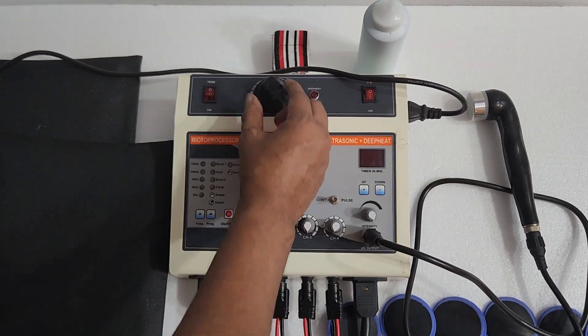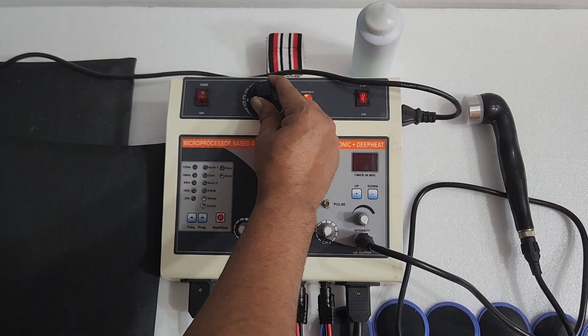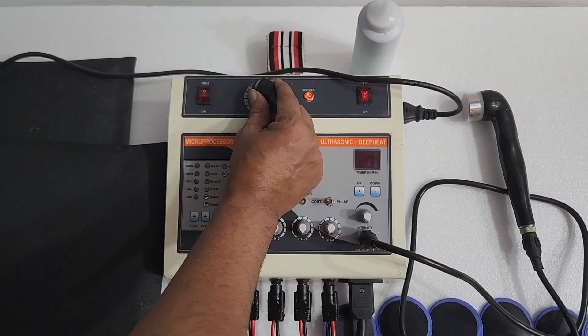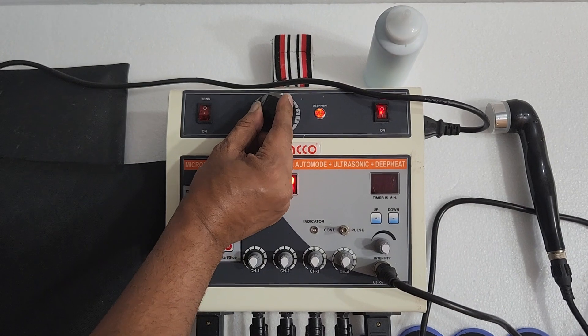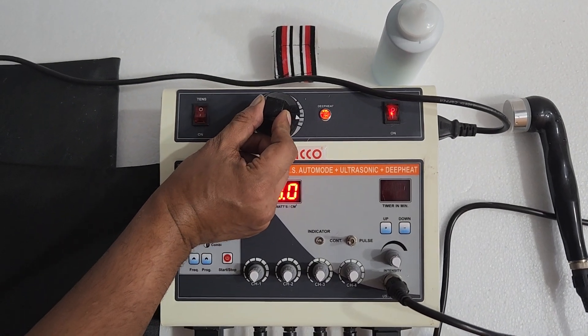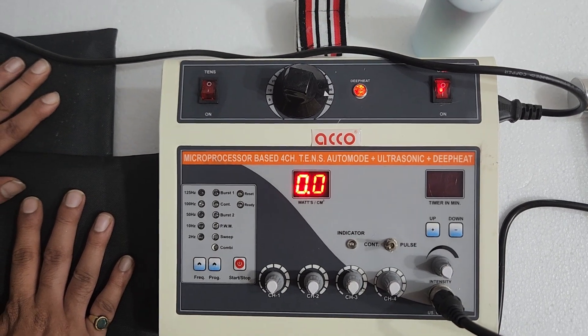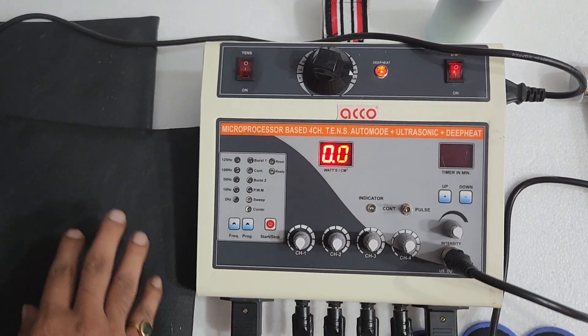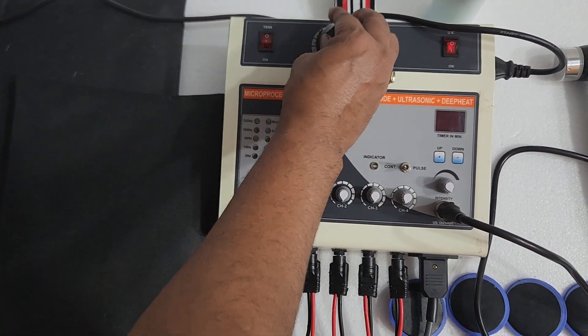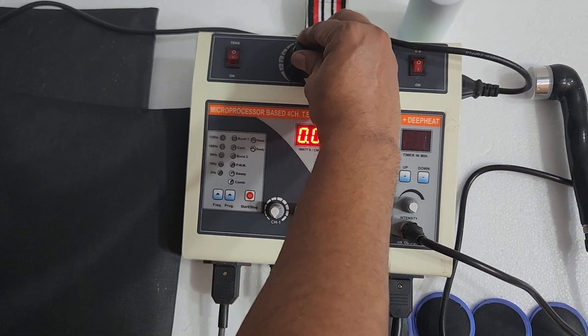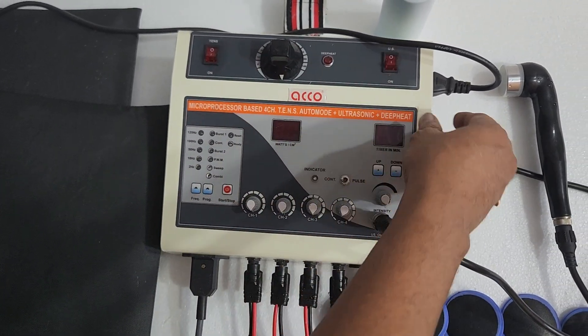Now for deep heat, you have to switch on the deep heat and you can set the temperature as per the requirement. Once the treatment is completed, make the knob at 0 and switch off the machine.